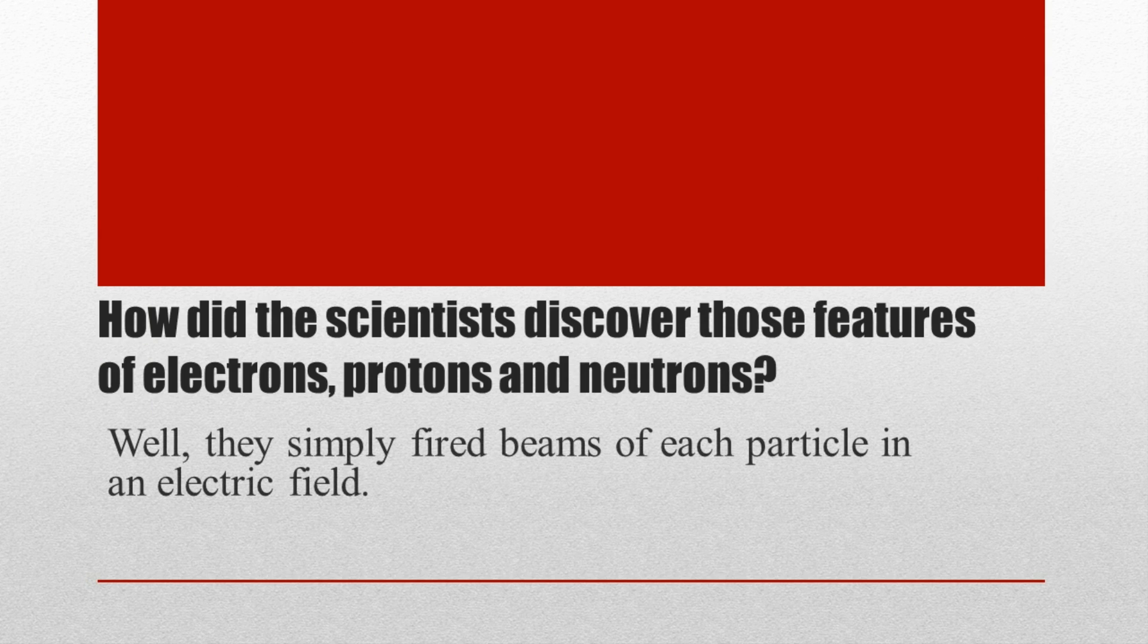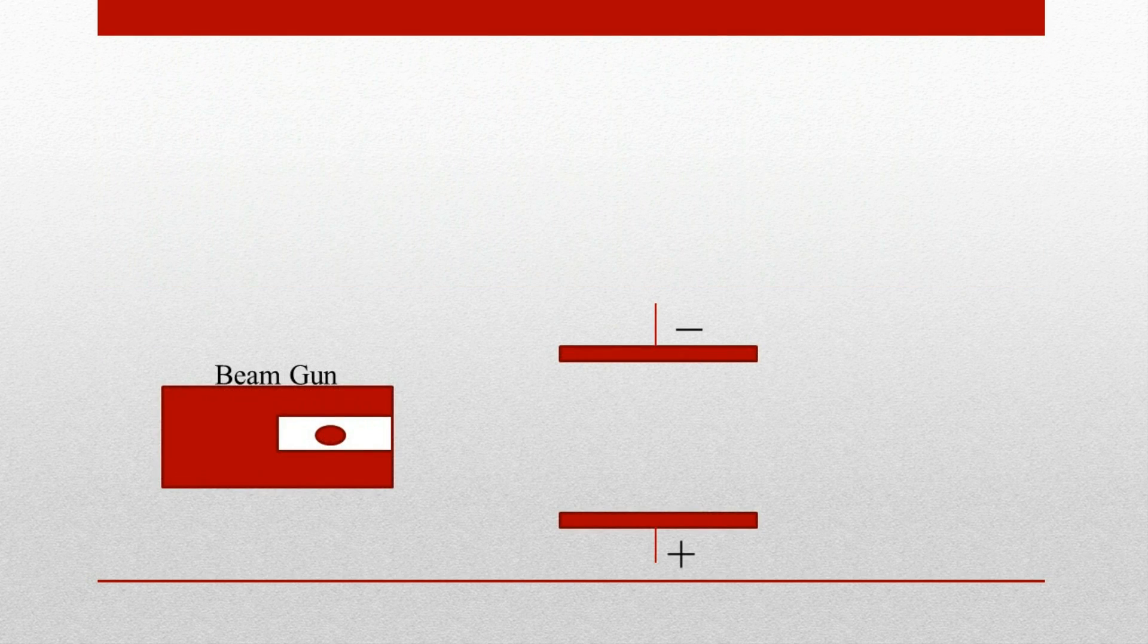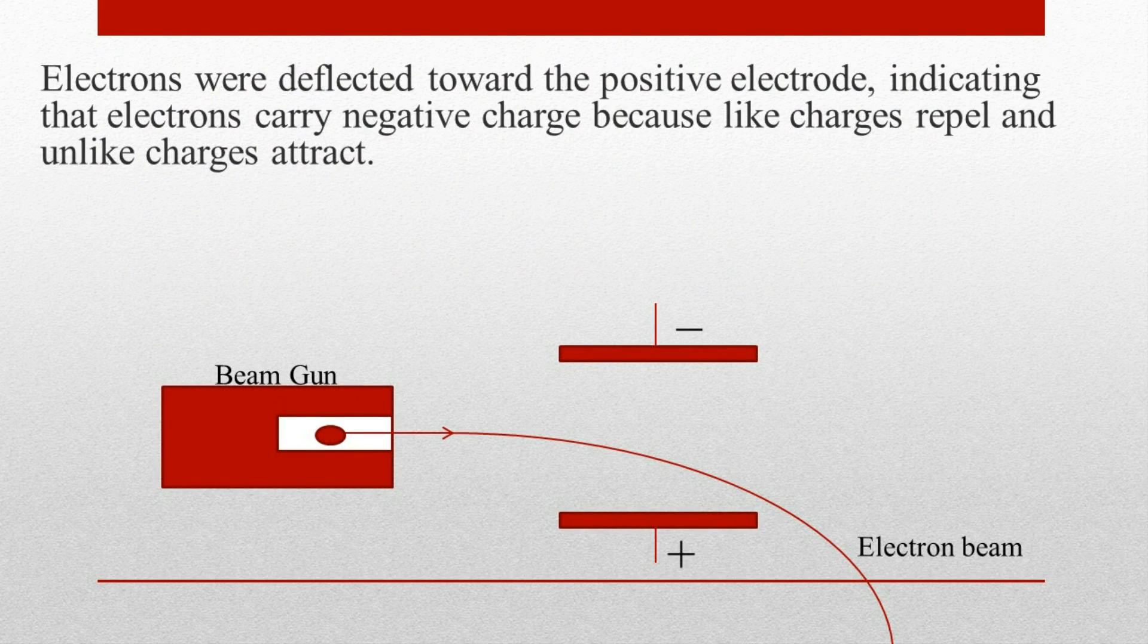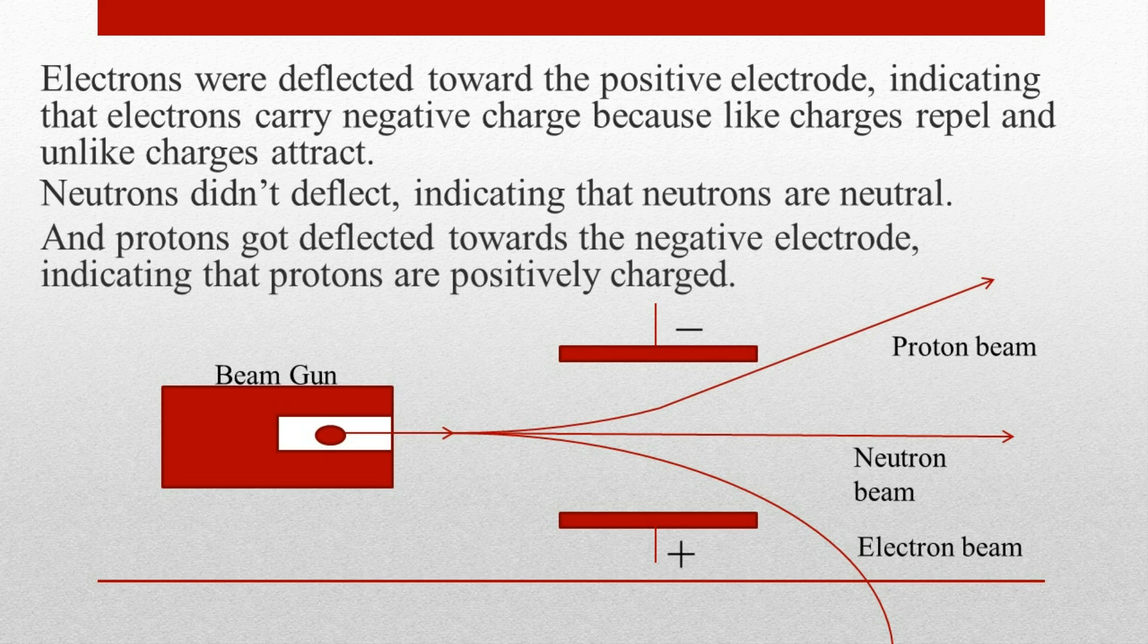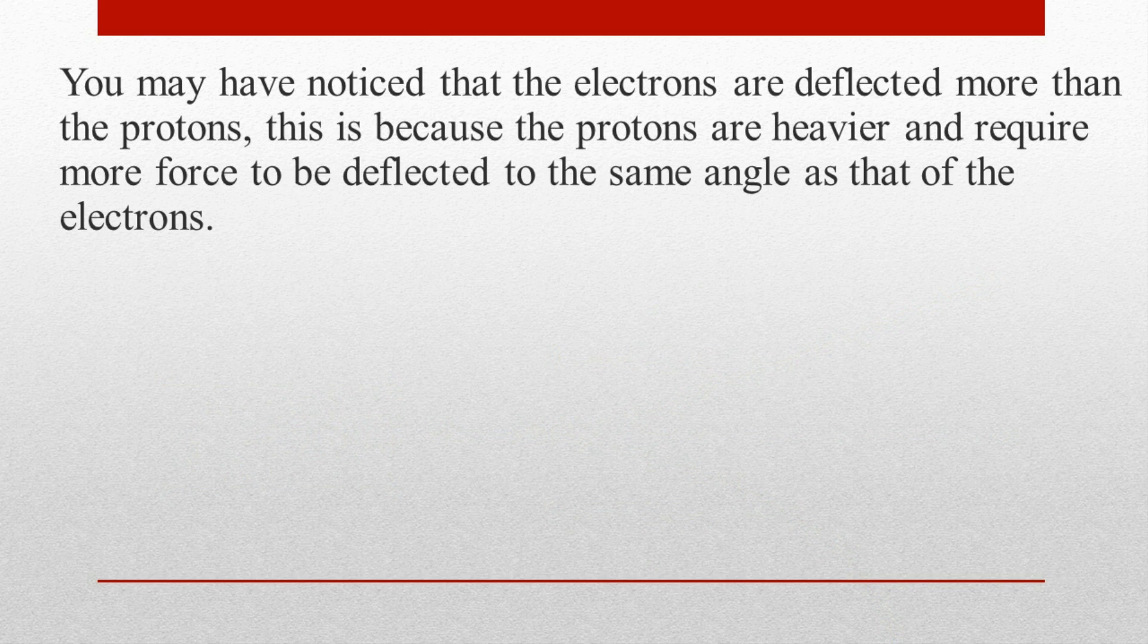Electrons were deflected toward the positive electrode, indicating that electrons carry negative charge, because like charges repel and unlike charges attract. Neutrons didn't deflect, indicating that neutrons are neutral. And protons got deflected toward the negative electrode, indicating that protons are positively charged.